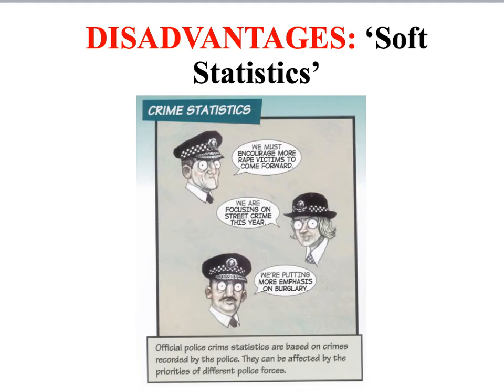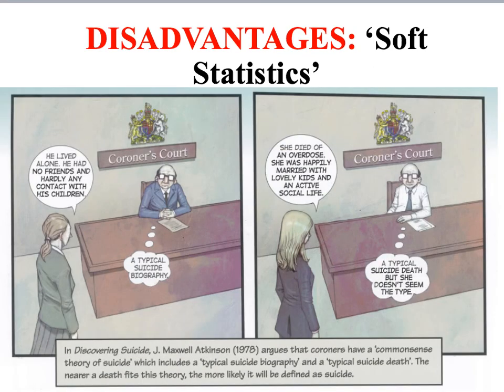For example, police crime statistics only measure the amount of crimes reported to and recorded by the police, which represents just a small minority of the total amount of crime committed within the UK. As we can see in the cartoon, a rise in certain types of crimes might simply reflect a change in the priorities of the police.